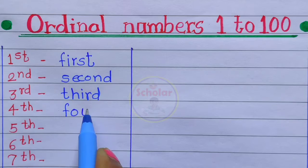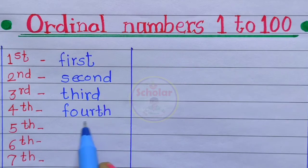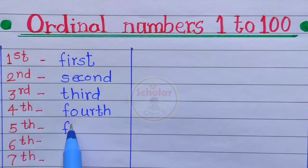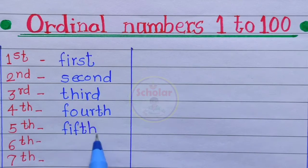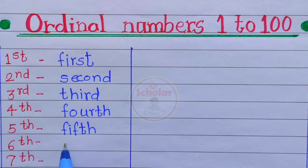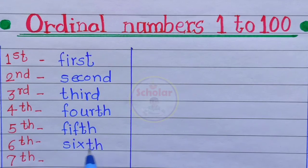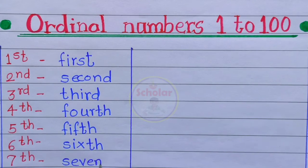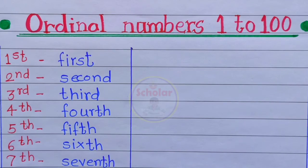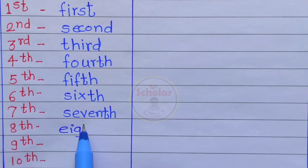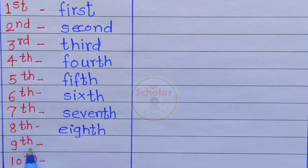Fourth — F O U R T H — fourth. Fifth — F I F T H — fifth. Sixth — S I X T H — sixth. Seventh — S E V E N T H — seventh. Eighth — E I G H T H — eighth.